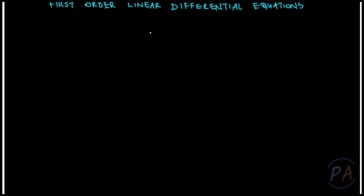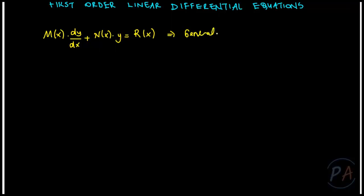First, let's write a first-order linear differential equation as M(x) times dy/dx plus N(x) times y equals R(x). This form is a general form for a first-order differential equation in one variable. Here we see that M(x), N(x), and R(x) are functions of the independent variable x, and the dependent variable is y equals y(x).